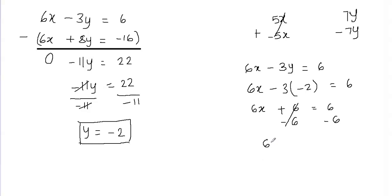On the left side this gives 6x, and on the right side 6 minus 6 equals 0. Dividing both sides by 6, the 6s cancel, leaving x equals 0 divided by 6, which equals 0.